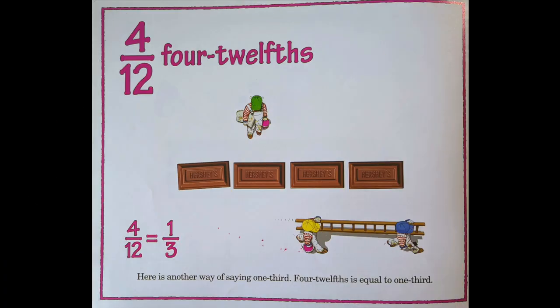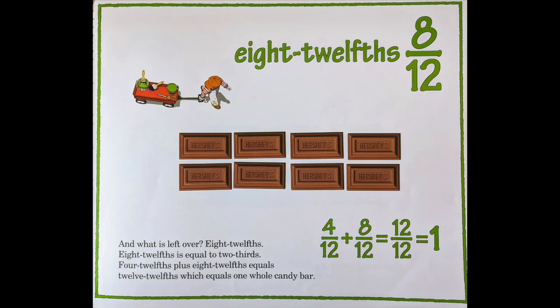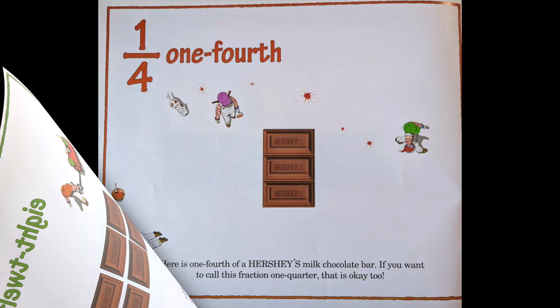Four twelfths. Here is another way of saying one third — four twelfths is equal to one third. Eight twelfths is equal to two thirds. Four twelfths plus eight twelfths equals twelve twelfths, which equals one whole candy bar. Three twelfths is equal to one fourth.